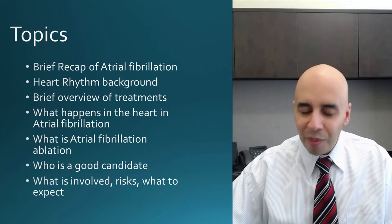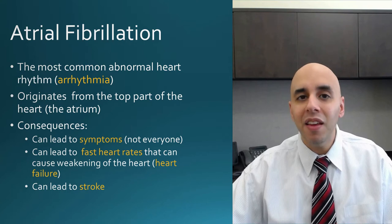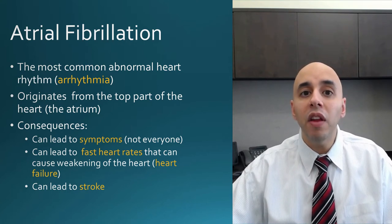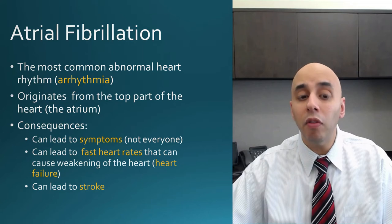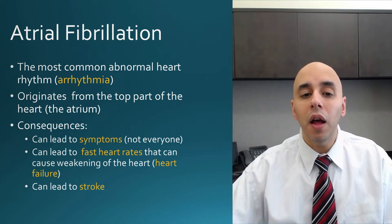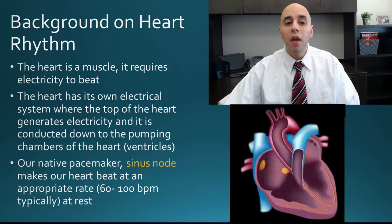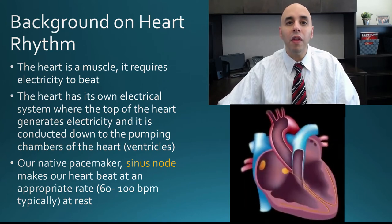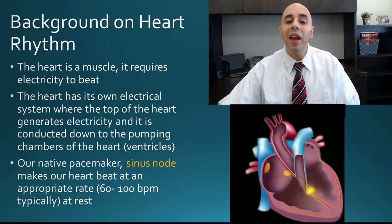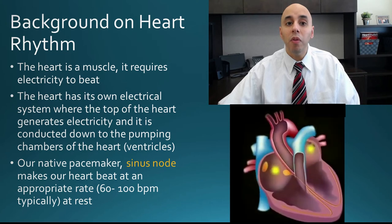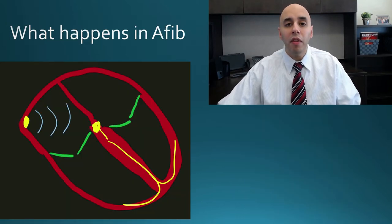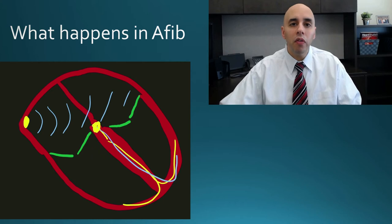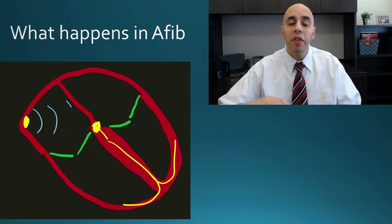Atrial fibrillation is an abnormal heart rhythm, or arrhythmia — in fact, it is the most common arrhythmia. It originates from the top chamber of the heart and can lead to symptoms, fast heart rates, and clots which can cause stroke. The heart is a muscle with its own electrical system. Normally, electricity starts from the sinus node, spreads through the top, and goes down to the bottom. With atrial fibrillation, that orderly wave of electricity is replaced with chaotic electrical activity.